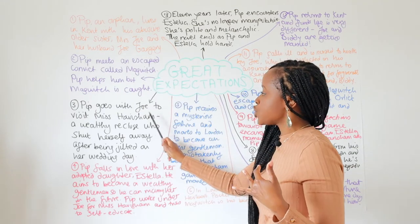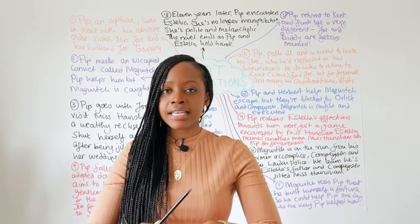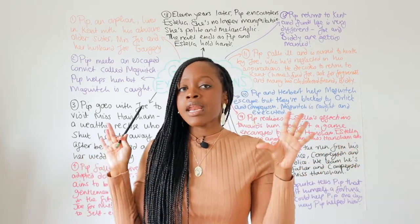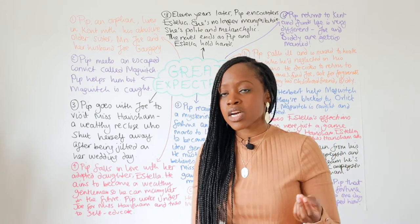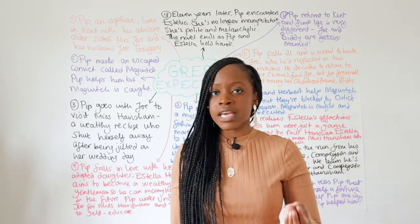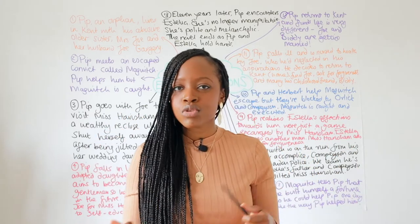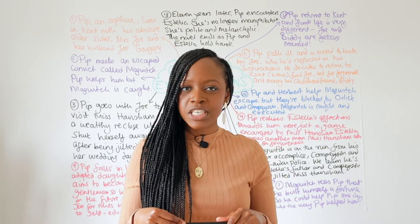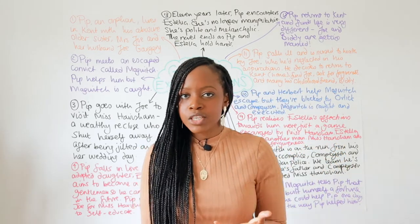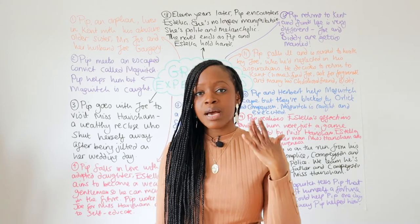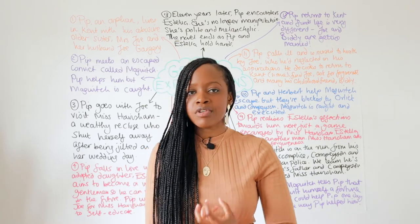Pip then goes with Joe to visit Miss Havisham, who's a wealthy recluse. A recluse is somebody that has totally separated themselves away from society. Miss Havisham is a wealthy recluse, and the major reason why she shut herself off from society is because she was jilted on her wedding day. Jilted means when somebody is waiting to be married, they walk down the aisle on the wedding day, and they are stood up by the person who's meant to be marrying them. In Miss Havisham's case, she was meant to be married many years ago to a man who later revealed his real identity. However, this man never showed up, and she becomes a recluse as a result of this crushing, embarrassing day.